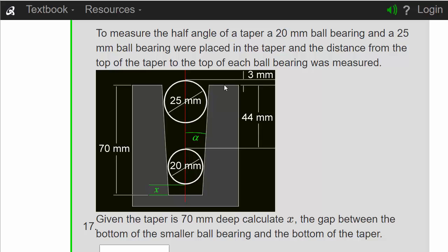The distance was measured from the top of the taper to the top of the lower ball bearing, so that was 44. The ball bearing had a diameter of 20, so that's 64. We've got 64, take that away from 70, and that gives us the answer: 6.